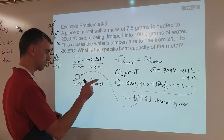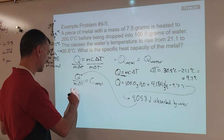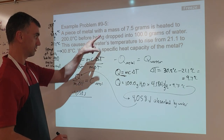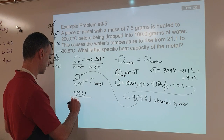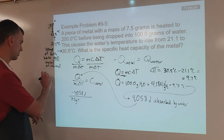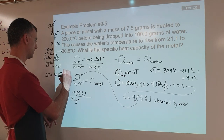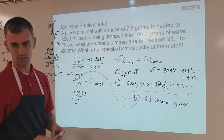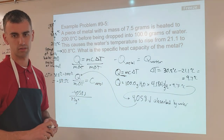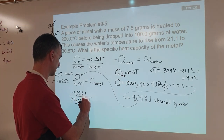Now let's plug in the numbers. The water absorbed positive 4,058 joules, so the metal must have lost the same amount — q for the metal is negative 4,058 joules. The mass of the metal is 7.5 grams. For ΔT of the metal: the final temperature is 30.8 minus the initial 200 degrees, giving negative 169.2 degrees Celsius. The metal cooled down so it should have a negative ΔT.